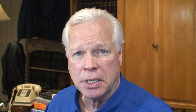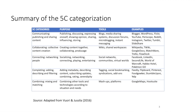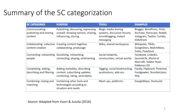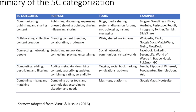Also reviewed in Unit 4 are the five C categories: communicating, publishing and content sharing; collaborating, such as collective content creation; connecting, such as networking people; completing, such as adding, describing, and filtering; and finally combining, which is mixing and matching.